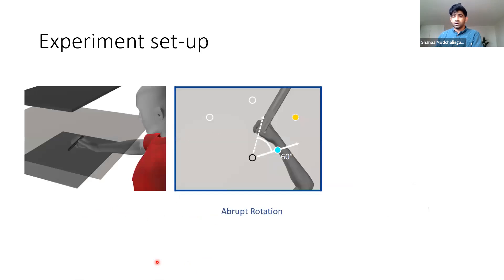Here's how our experiment setup looks like. People reached on a digitizing tablet here and their hand was occluded by a mirror and visual display was also shown on that mirror.